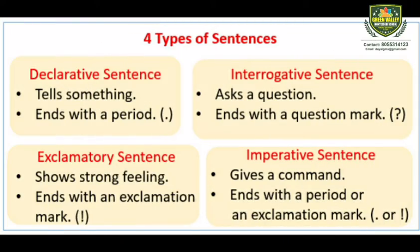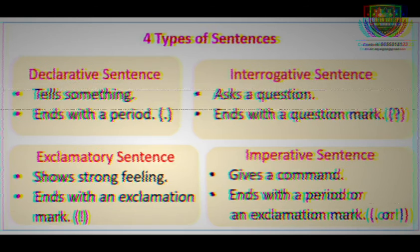So these were the four types of sentences. Each and every type of sentence has its own definition, characteristics, and examples. A declarative sentence tells something and always ends with a period. An interrogative sentence asks a question and ends with a question mark. An exclamatory sentence shows strong feelings and ends with an exclamation mark. An imperative sentence gives a command and ends with a period or exclamation mark. I hope this video will be very useful for you all. Thank you so much for watching.